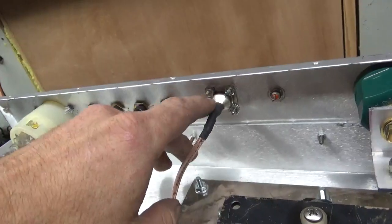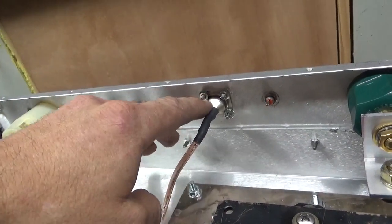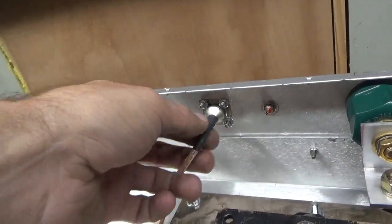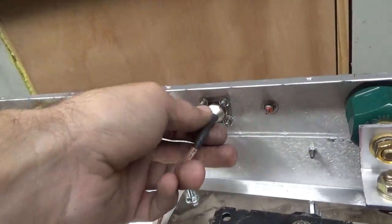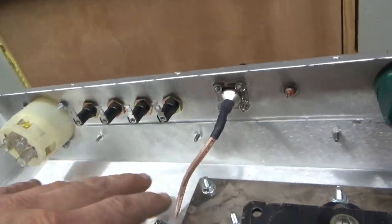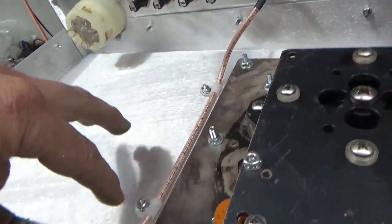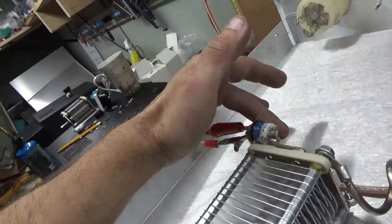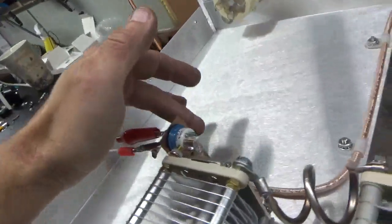Obviously, I soldered the center conductor to the center connection of the SO-239 first. Then slipped it over and then soldered the shield and put some heat shrink on it. Secured this coax with some clamp. I used a copper piece to mount the RJ-1A.